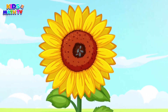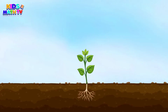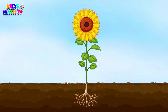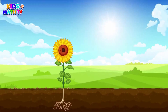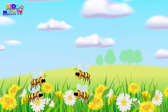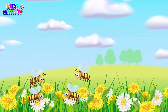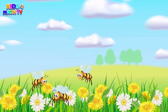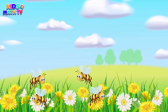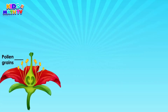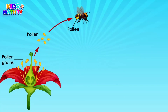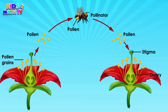Some flowers also attract bees and other insects that help pollinate the plant. Pollination is when the pollen from the flower's male parts — the stamen — is transferred to the female parts — the pistil.